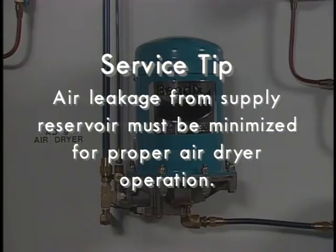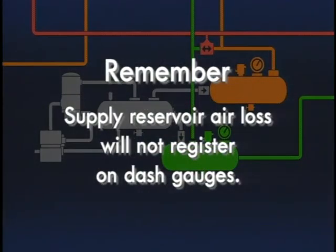Leakage in the supply reservoir will result in the compressor cycling between loaded and unloaded, causing the air dryer to alternate between the charge and purge cycle. It must be remembered that air loss in the supply reservoir only will not be registered on the dash gauges because of the single check valves that protect the service reservoirs.